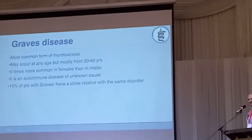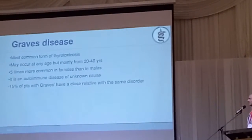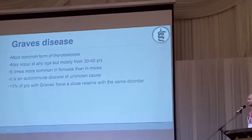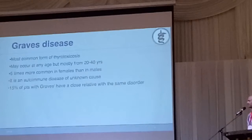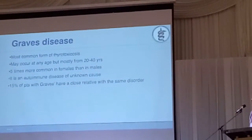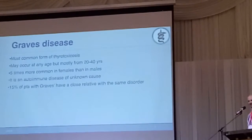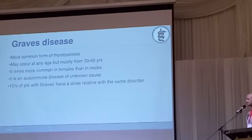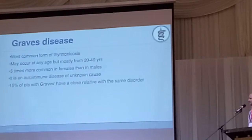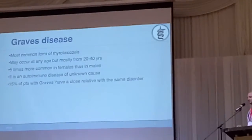So what's Graves' disease? Graves' disease is the most common form we actually encounter when talking about thyrotoxicosis. It usually occurs between the 20th and 40th year of life, and it's five times more common in females than males. So we rarely see a male with Graves'. It's an autoimmune disease, and 50% of patients with Graves' have some relative with Graves'.